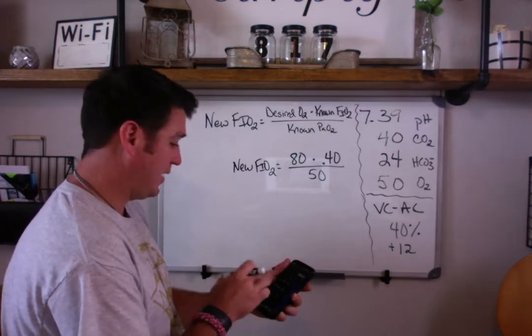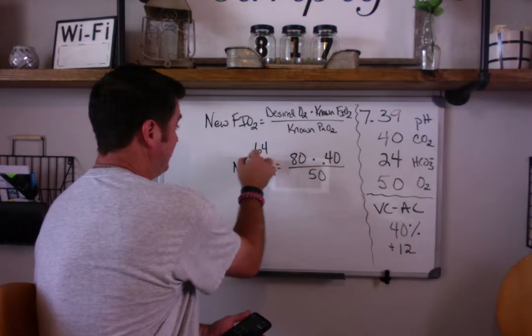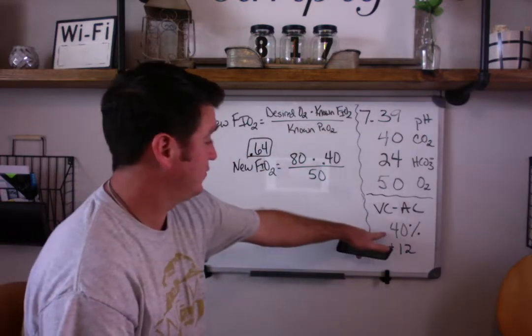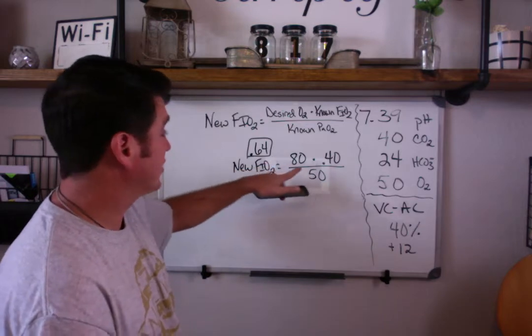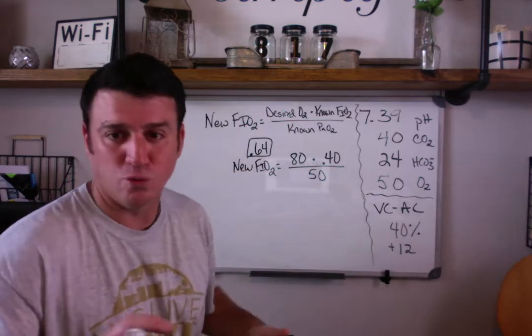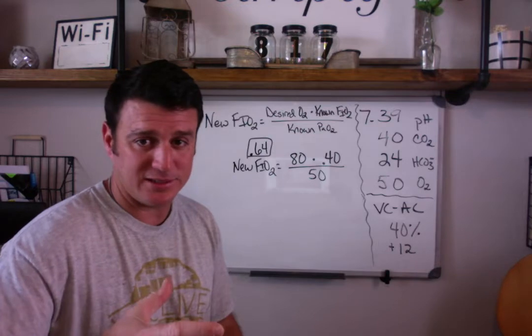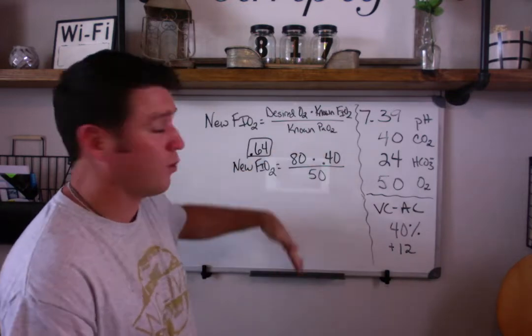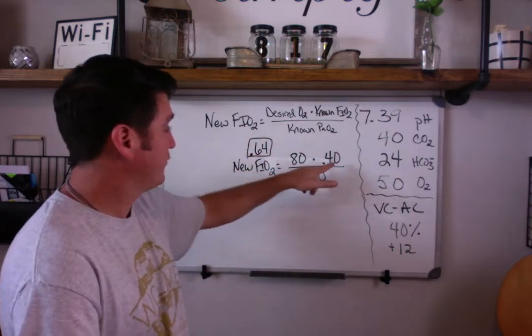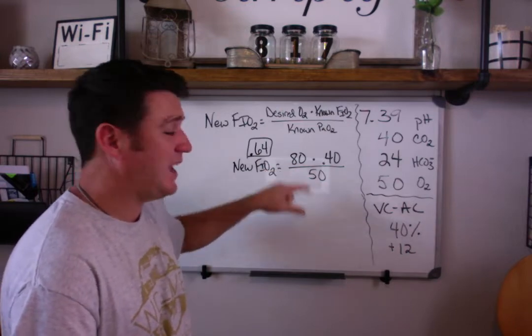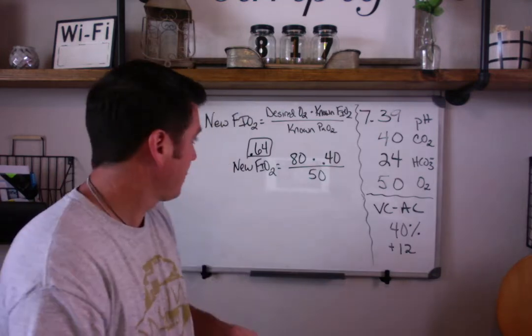We divide that by 50 and our answer here is our new FiO2 should be at 64 percent. If you increase this patient's FiO2 from 40 to 64 percent, which is probably not even possible on most vents but put it to 65, then you're going to get a PaO2 of 80, roughly, assuming you change nothing else. If you start changing other stuff, then you're going to mess up this relationship. But for the most part, nothing else changes. Increasing FiO2 to 64 percent from 40 will increase our PaO2 from 50 to 80. That makes sense, right? If you increase FiO2, in theory you should increase PaO2.